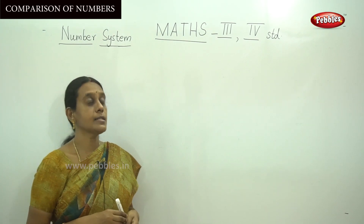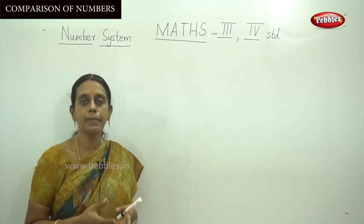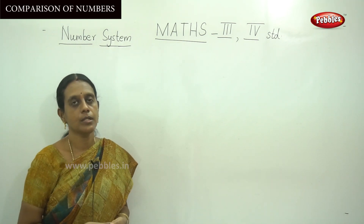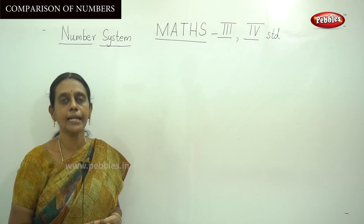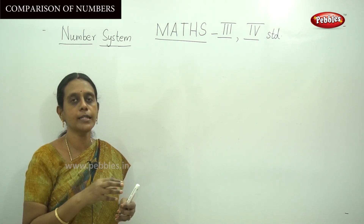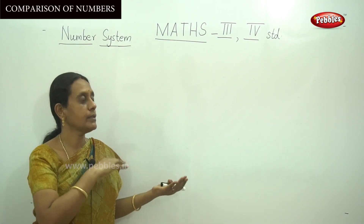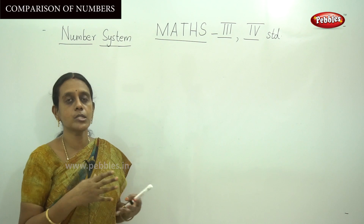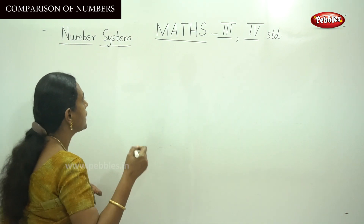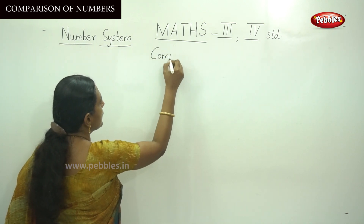Dear students, now we are going to learn comparison of numbers. We have already arranged the smaller and greater six-digit numbers, and how to put the lesser sign, greater sign, and equal sign with varied digits of numbers. Our heading is comparison of numbers.